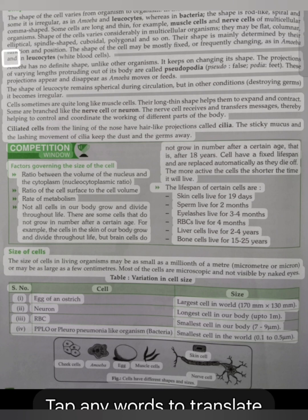The shape of the cell may be mostly fixed, or frequently changing, as in amoeba and in leukocytes (white blood cells). Amoeba has no definite shape, unlike other organisms. It keeps on changing its shape. The projections of varying lengths protruding out of its body are called pseudopodia (pseudo=false, podia=feet). These projections appear and disappear as amoeba moves or feeds. The shape of leukocyte remains spherical during circulation, but in other conditions (destroying germs), it becomes irregular.